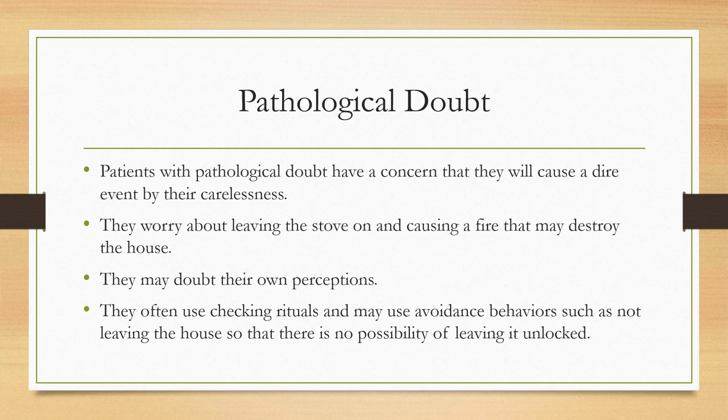Pathological doubt involves a concern that the patient will cause a dire event through their carelessness. They worry about leaving the stove on and causing a fire, so they may check the house multiple times. They may leave for work and feel compelled to turn around and return home to make sure all the burners are off and the toaster is unplugged. They may doubt their own perceptions that they've already checked everything and that there is no problem, and they often use checking rituals or avoidance behaviors such as not leaving the house.